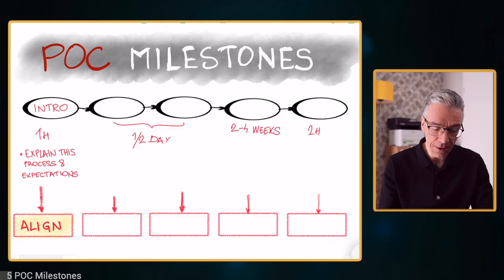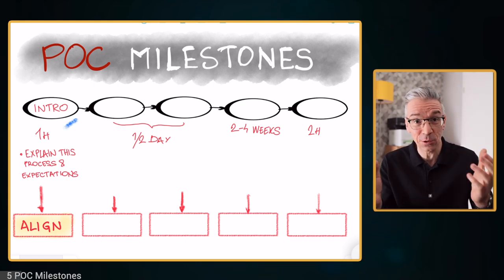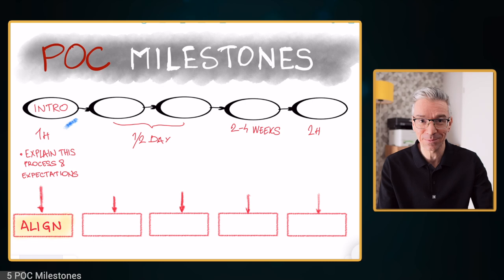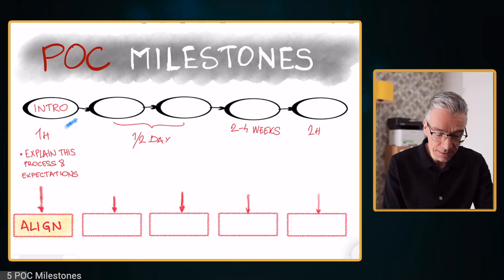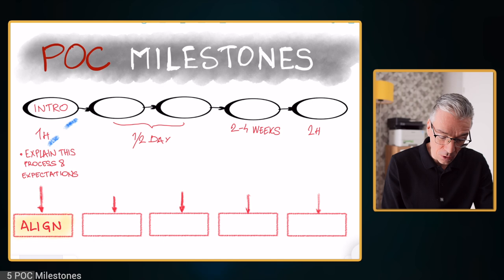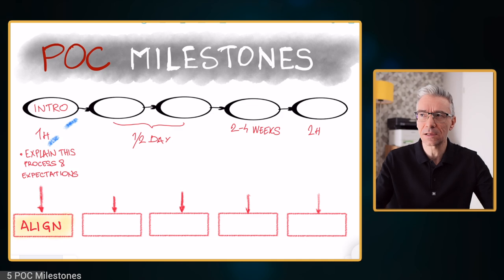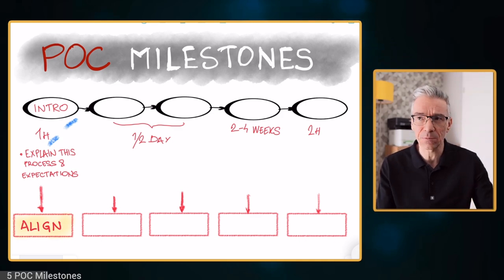Let's get into it and talk about the five milestones of the POC process — this is how I do it. The first one is the intro, where I actually present this whole process to the customer, exactly what I'm explaining now. It's usually just a one-hour meeting, and all it takes is to go through the steps, through the milestones, and align on the process with the customer.